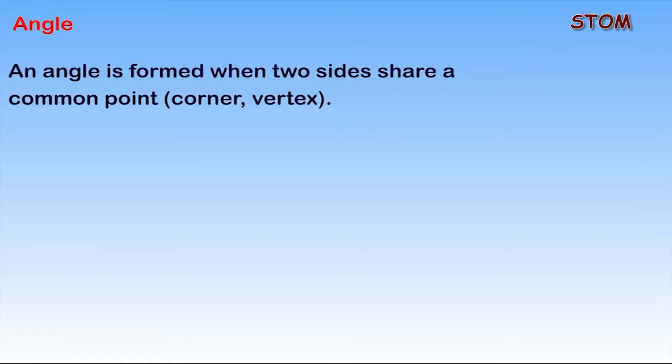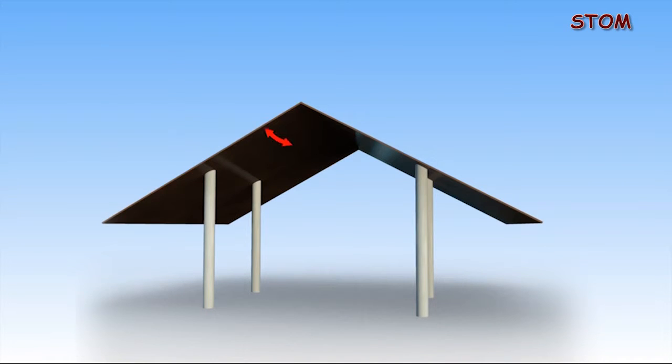Angle. An angle is formed when two sides share a common point. This point is called the corner or the vertex. It is measured in degrees or radians.